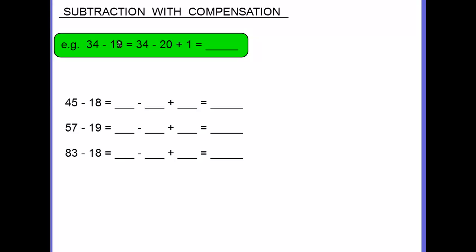Well, we can add 1 and round it up to 20, which is what has happened here. So that means we're taking away 20 instead of 19, and we compensate that action by adding 1 on the end.